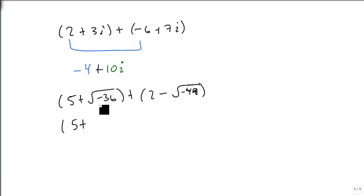So this is really 5 plus, the negative becomes an i, the square root of 36 is 6. This is 2 minus i, the square root of 49 is 7. There's a plus between there. So now we just add them together. 5 plus 2 is 7. 6 minus 7 is minus i. And there's our answer.